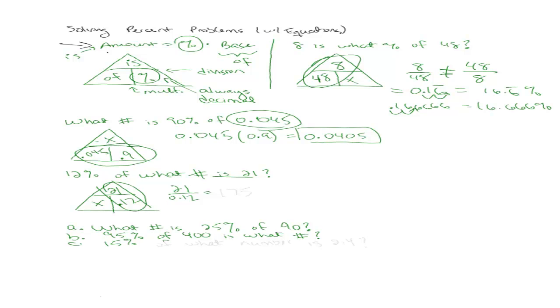Do you guys have an answer? Check your decimal. 175. That makes some sense because we were trying to figure out 12% of what number is 21. If my answer is 1.75, then that would mean that 12% of 1.75 is 21, and that doesn't make any sense because 100% of 1.75 would be 1.75. 175 makes a lot more sense because 12% of a bigger number like 175 would be something like 21.